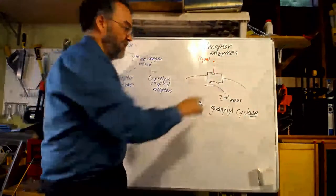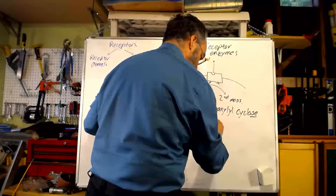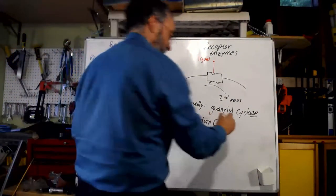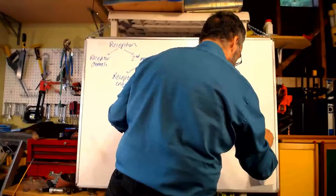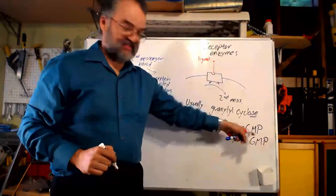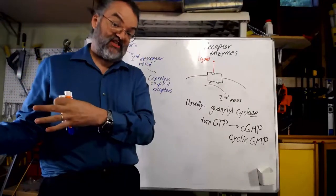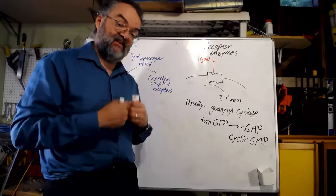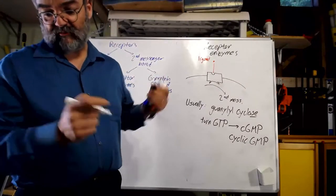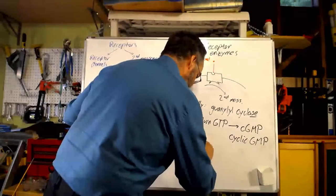Guanylyl cyclase — notice the '-ase' that says it's an enzyme — turns a molecule called GTP (guanosine triphosphate, very much like ATP) into cGMP, which stands for cyclic guanosine monophosphate. That is the second messenger in this case. GTP is sitting around inside the cell, and when the enzyme is active it turns some of that GTP into cGMP, which then usually regulates other stuff inside the cell, maybe other enzymes.